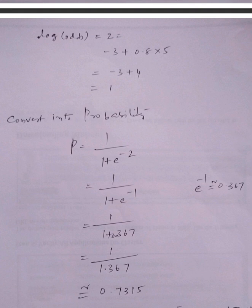To calculate that, first we need to calculate the z value using mx + c. So -3 + 0.8 × 5 = -3 + 4 = 1. The z value is 1.